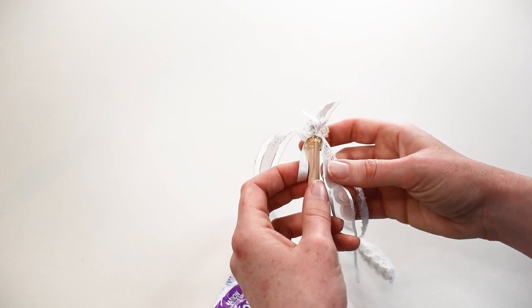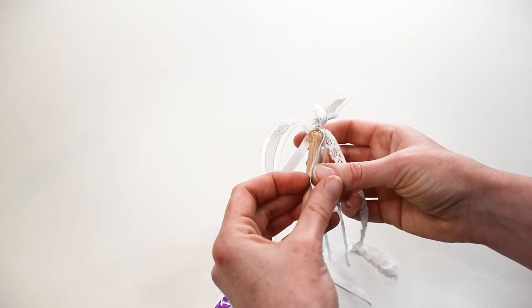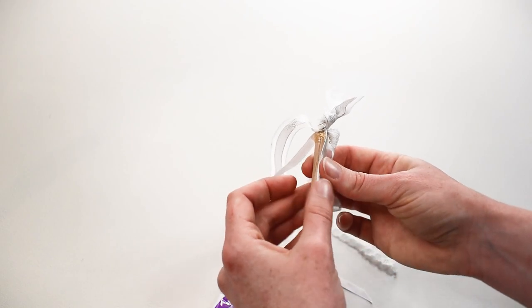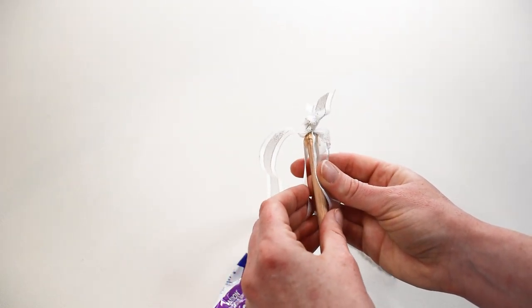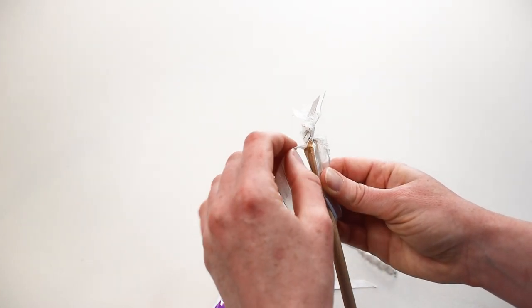This is a little fiddly, but pull your ribbon pieces down around the dowel so they stick to the side and are secure. Place it aside to dry and go make yourself a coffee.